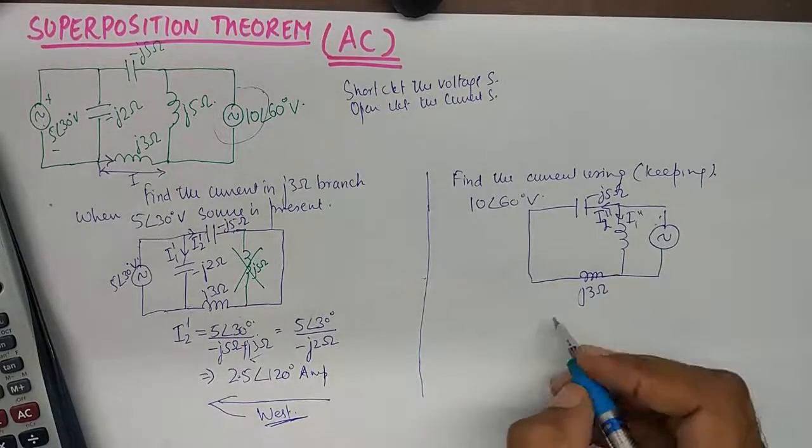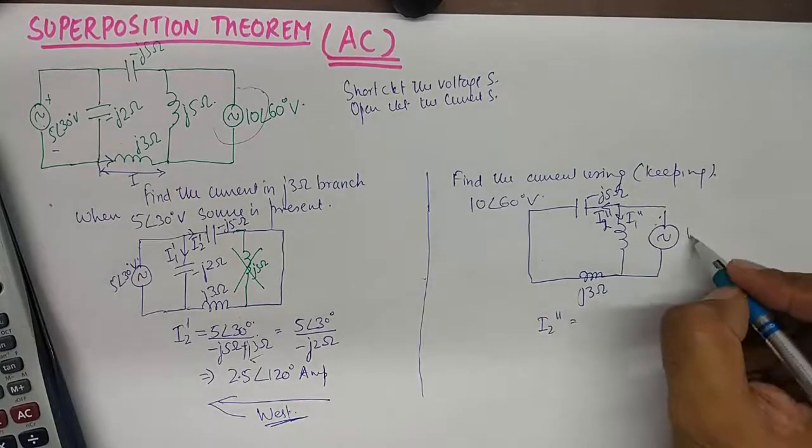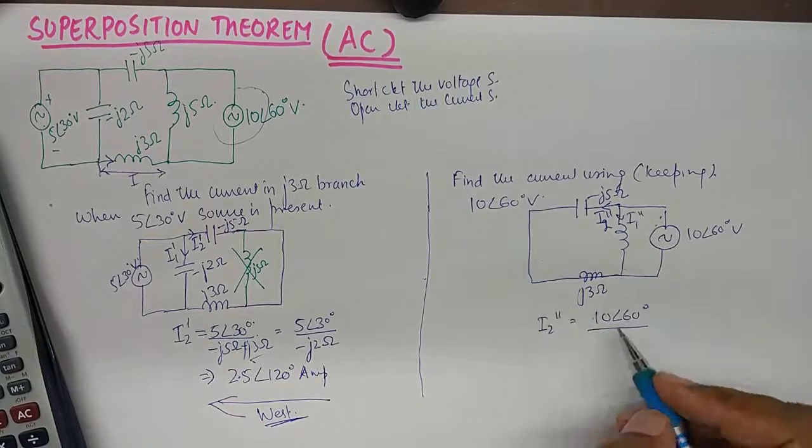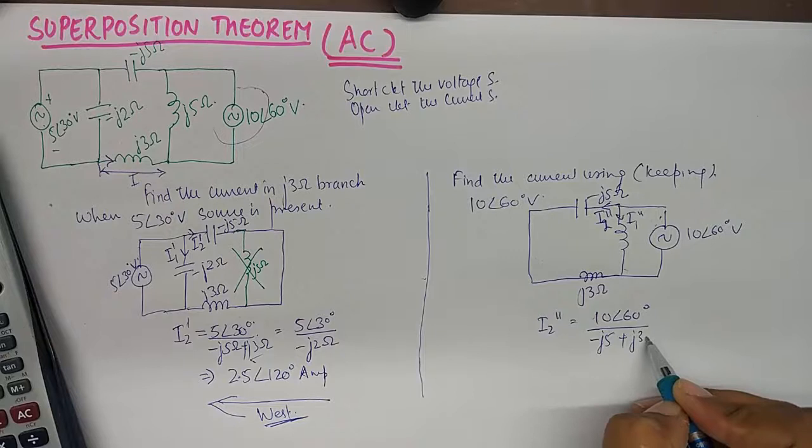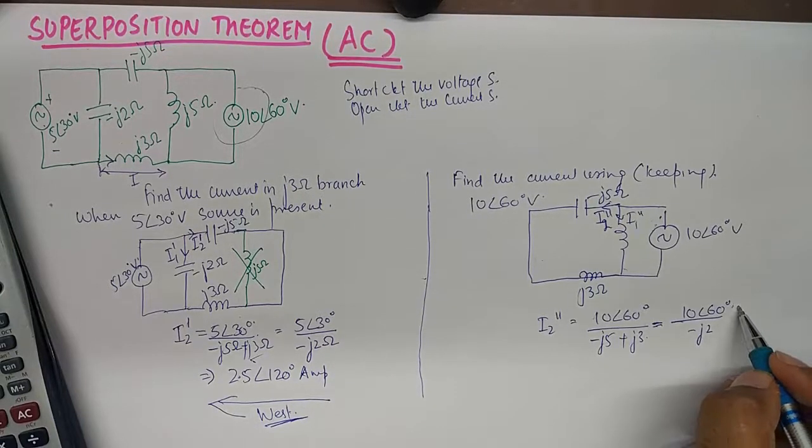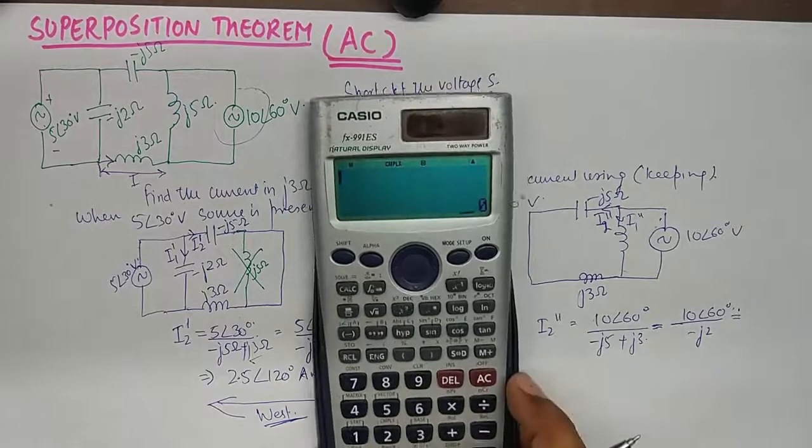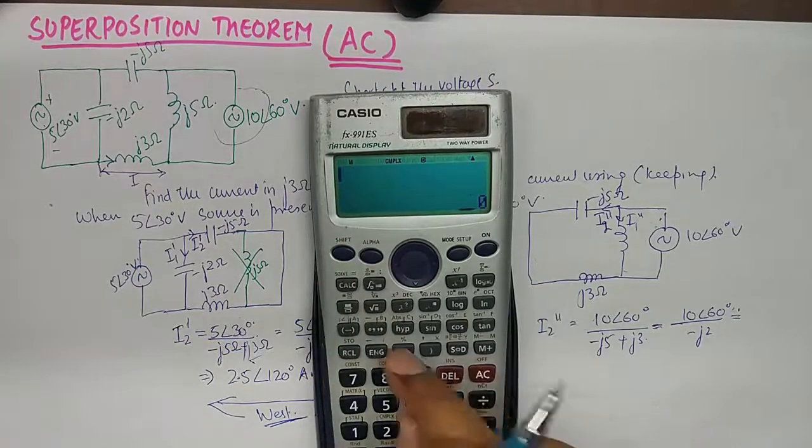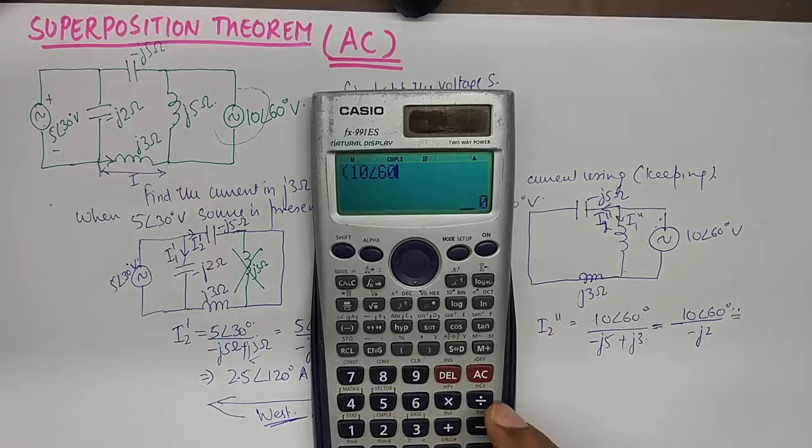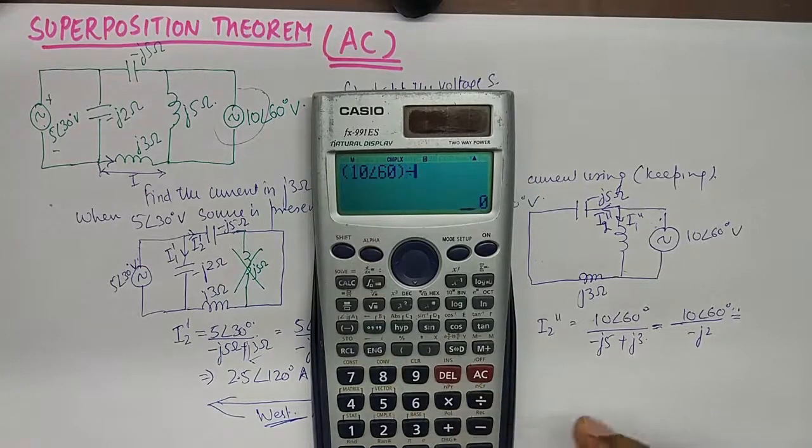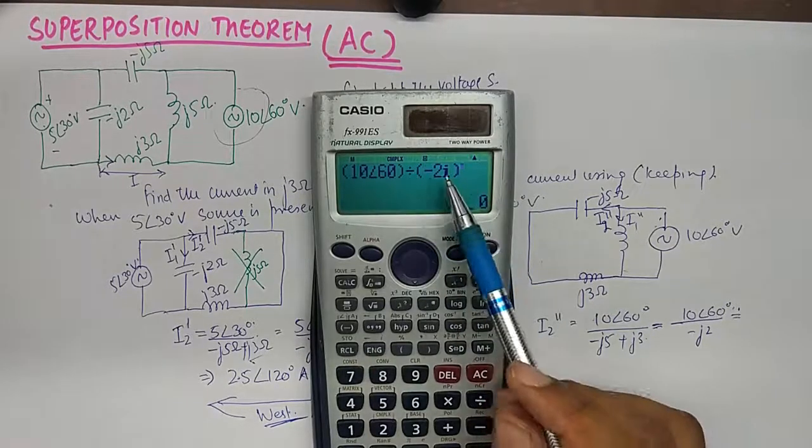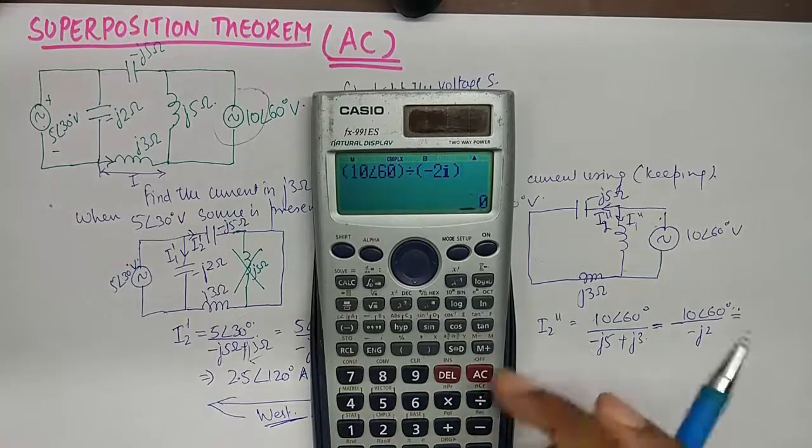To find I2 double dash, we'll simply divide the voltage by the impedance of this branch which is minus J5 plus J3 ohm. And that gives me 10 angle 60 divided by minus J2 and I'll again use calculator for this. 10 angle 60 divided by J2 and by the way, J2 will be written as minus 2i. It's just above English.